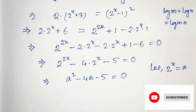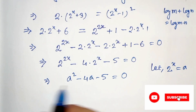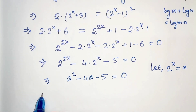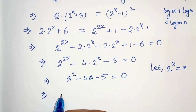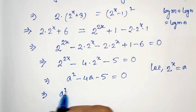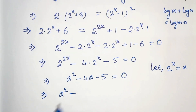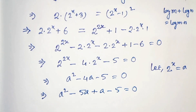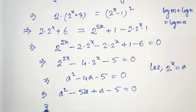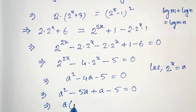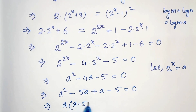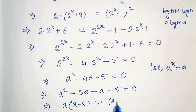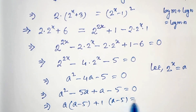This is our quadratic equation so we have to factorize this. To factorize, we write a squared minus 5a plus a minus 5 equals to 0. In the next step we take a common, so it will be a times (a minus 5) plus 1 times (a minus 5) equals to 0.